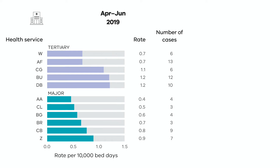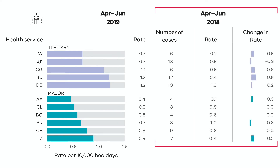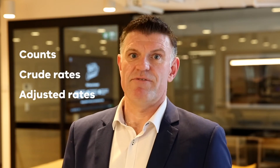Where available, additional information is provided to the right-hand side of the bars, including previous year's results. There are three ways data is displayed in bar charts – counts, crude rates and adjusted rates.